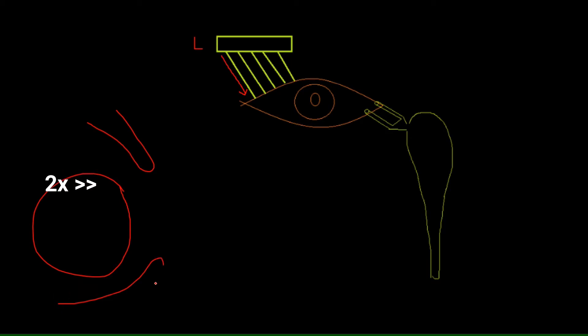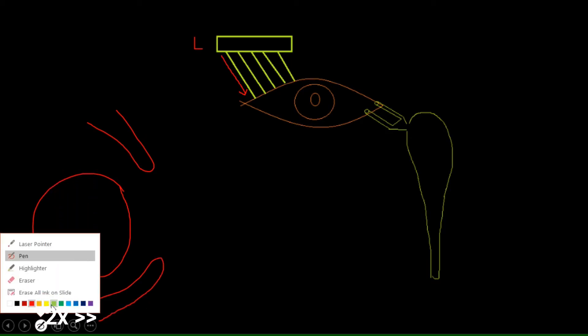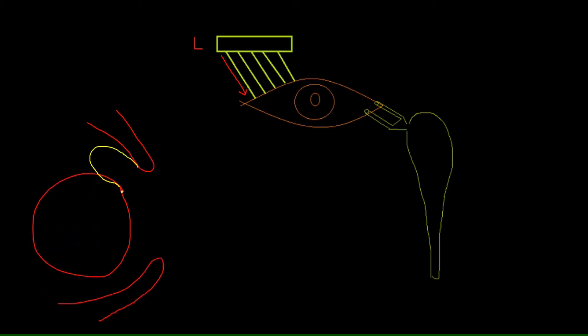We have the conjunctiva covering here, here's the fornix. The lacrimal gland is here and its ducts penetrate through the conjunctiva to the upper fornix, the superior fornix, and they deposit their tears here. When we blink, we open and close our eyelids. That causes the tears to distribute all over the eye.